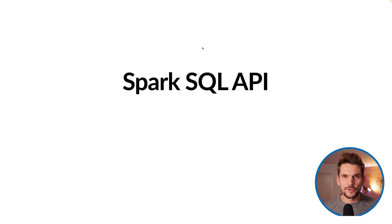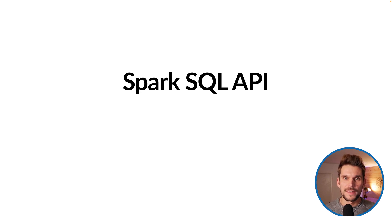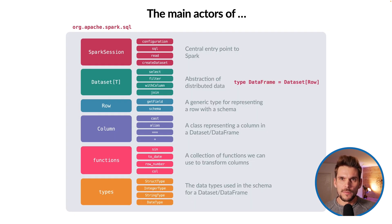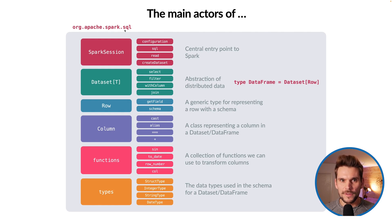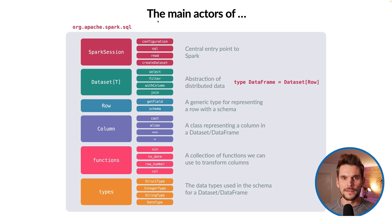Let's talk about the structure of the Spark SQL API, because that's what we are going to use in the next couple of videos for the code demonstrations. I want to give you a brief overview of how the Spark SQL API is structured. Everything we are going to use is located within the org.apache.spark.sql package — that's the SQL API we've been referring to previously.